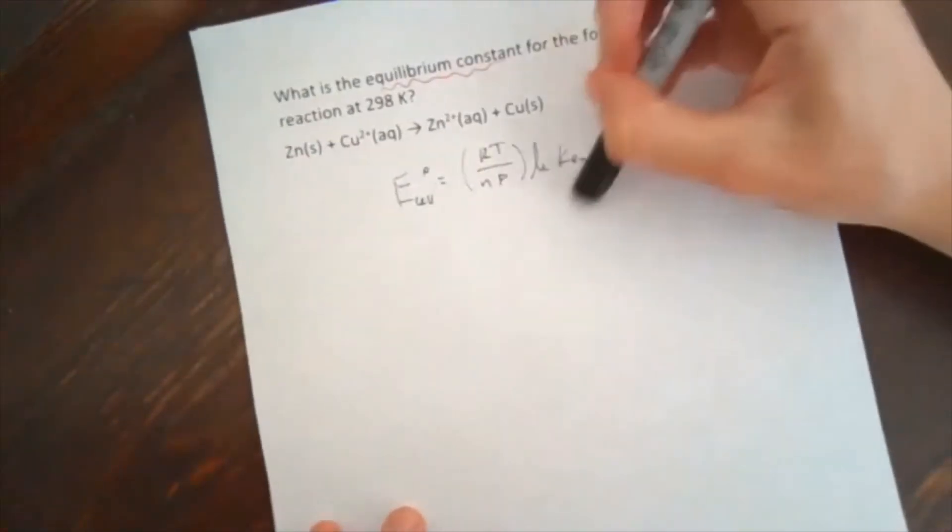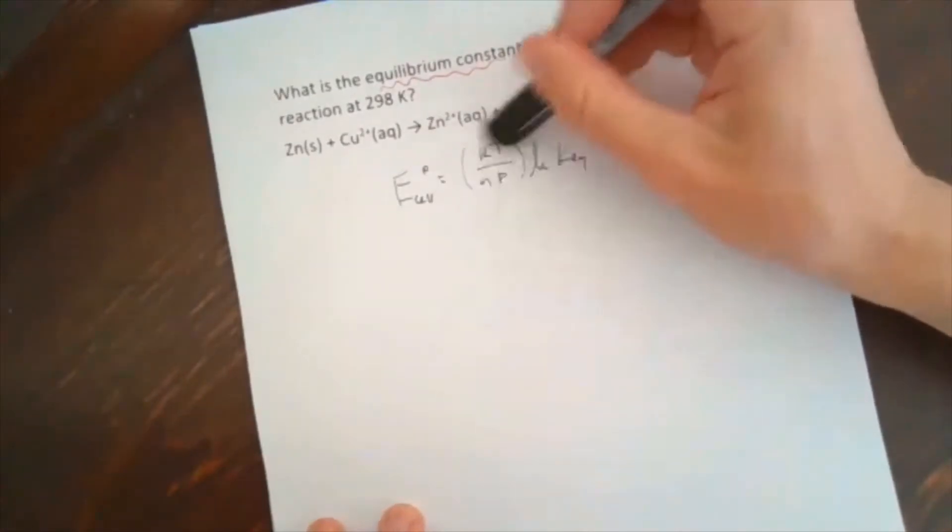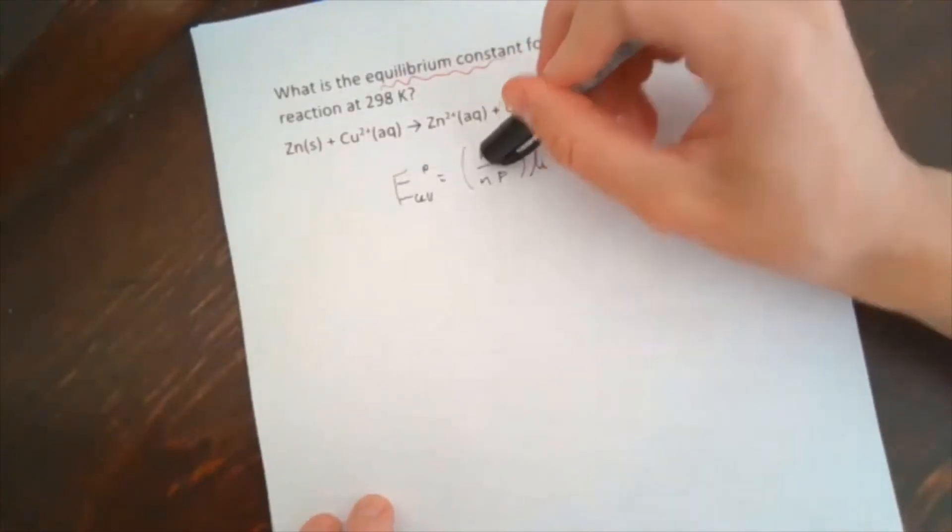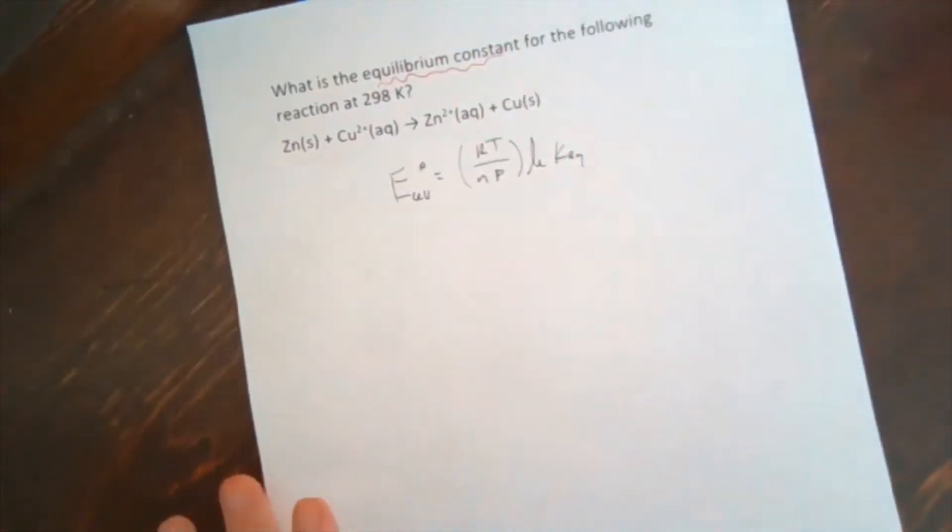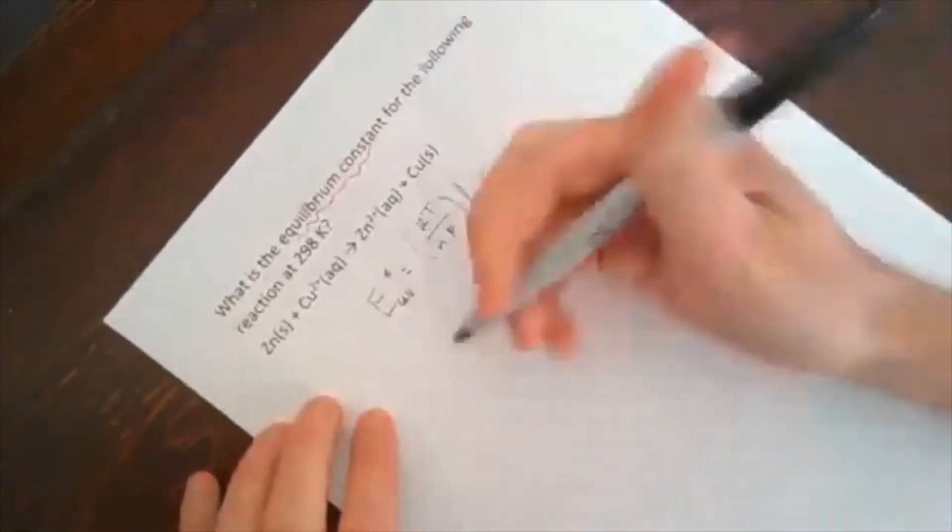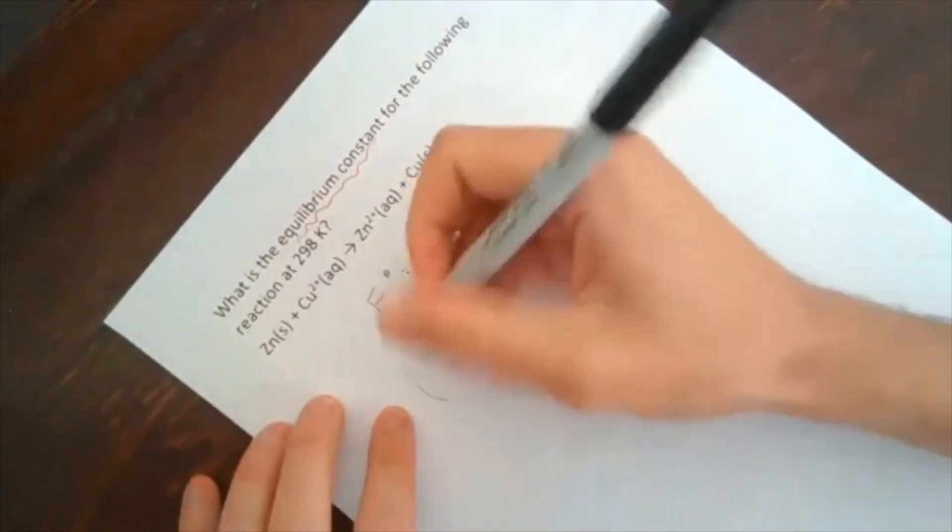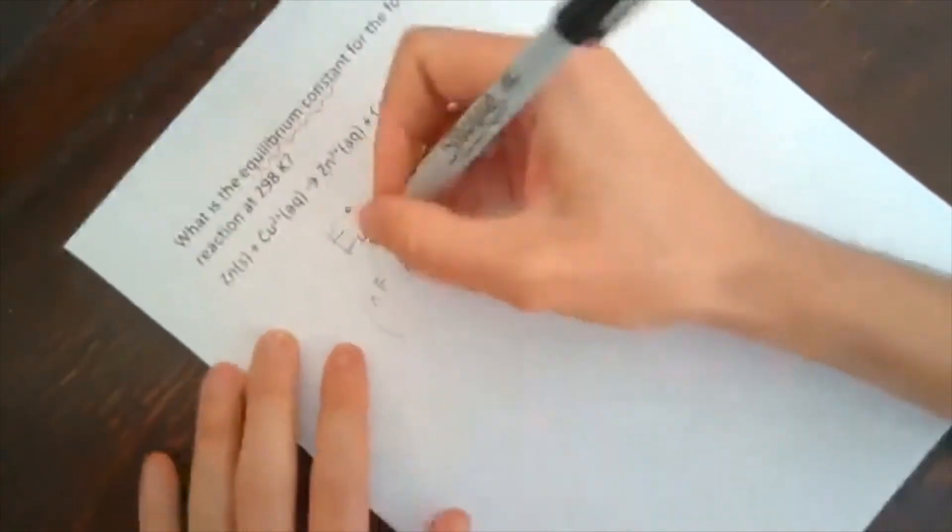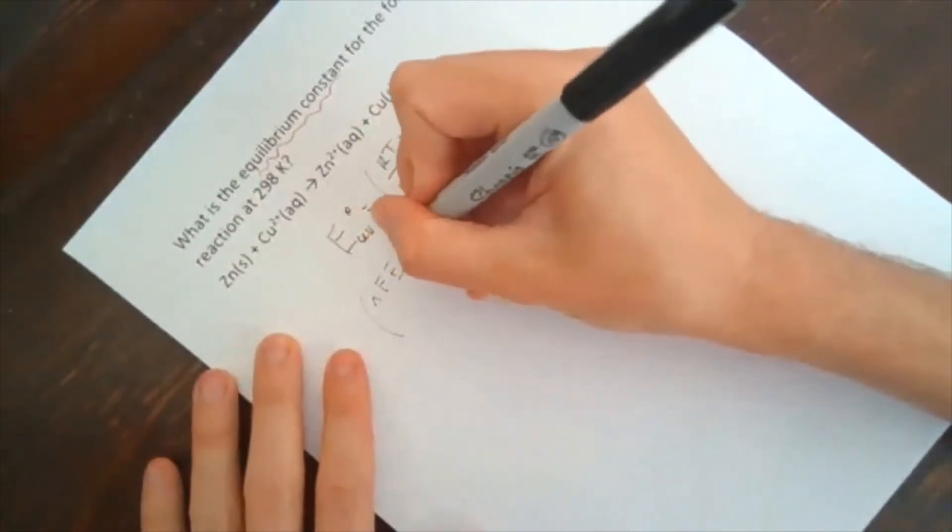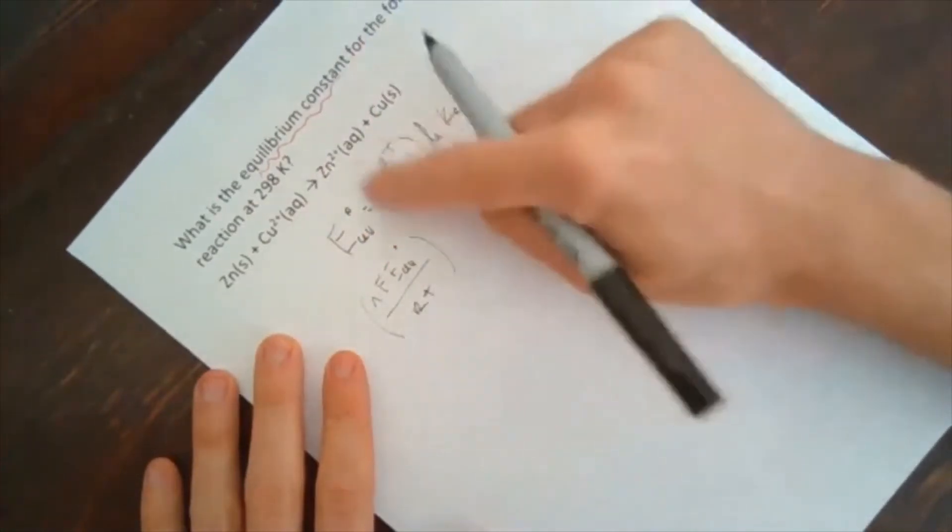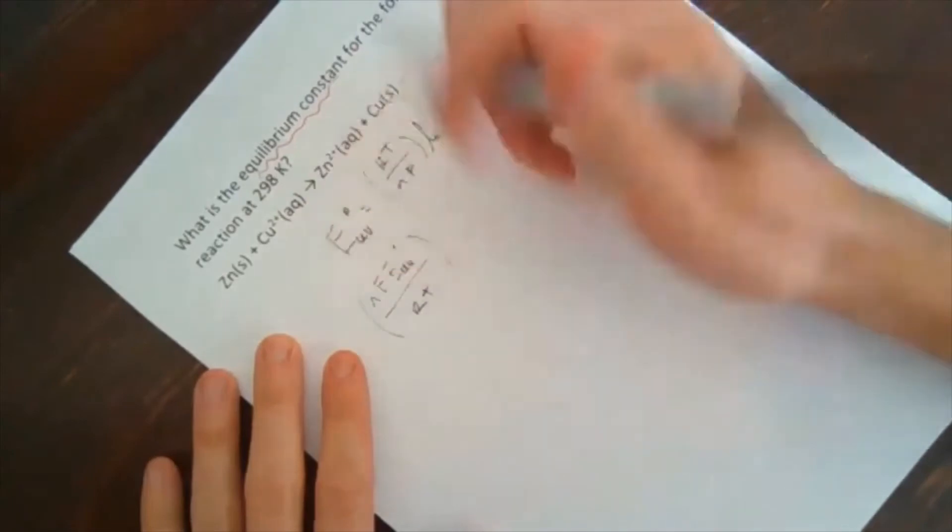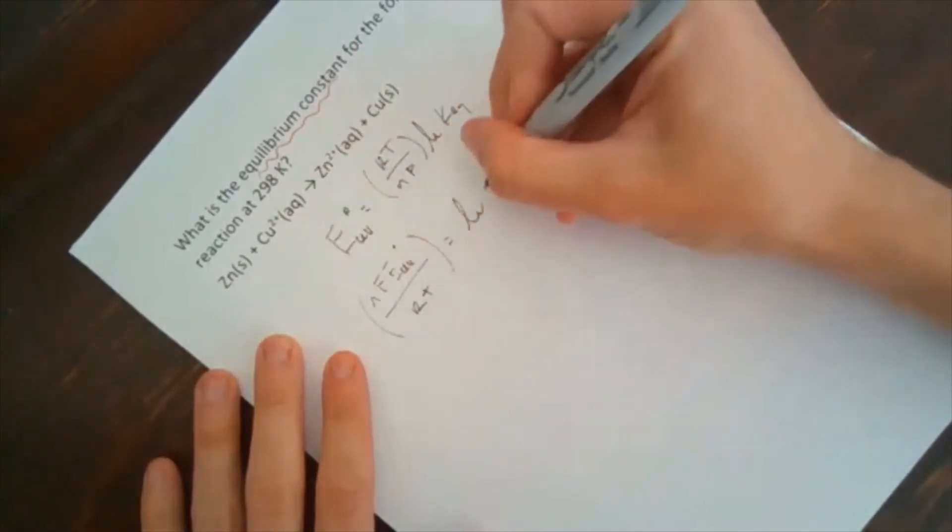We can figure out what the cell potential would be for that reaction, the standard cell potential from just tabulated data, and then relate that to the equilibrium constant. So how this equation is written, it's easier to plug in a value for the equilibrium constant and then get that into the cell potential. Instead, we want the equilibrium constant, so we're going to need to do some algebra and rearrange this equation. So I want to isolate the equilibrium constant, which means I need to get rid of this fraction. So functionally divide by this fraction, which is the same thing as multiplying by the reciprocal.